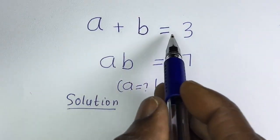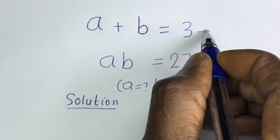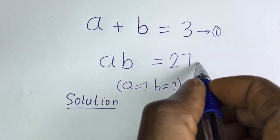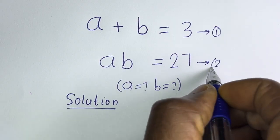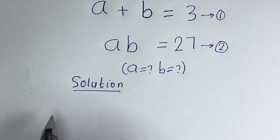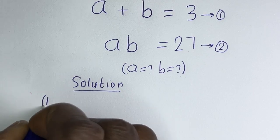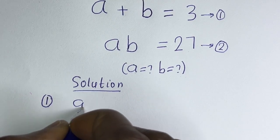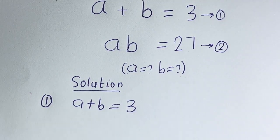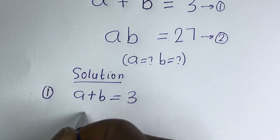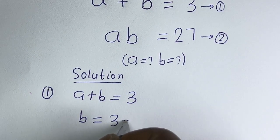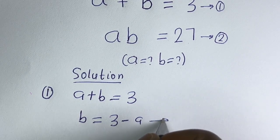From here, a plus b is equal to 3 — let's call this equation 1. A times b is equal to 27 — let's call this equation 2.